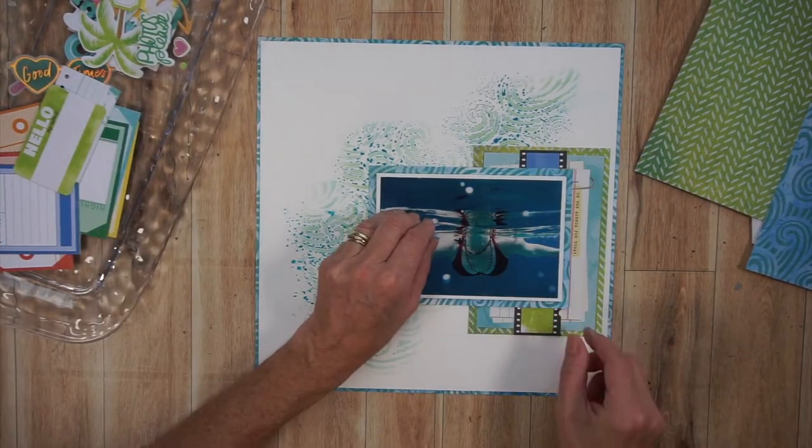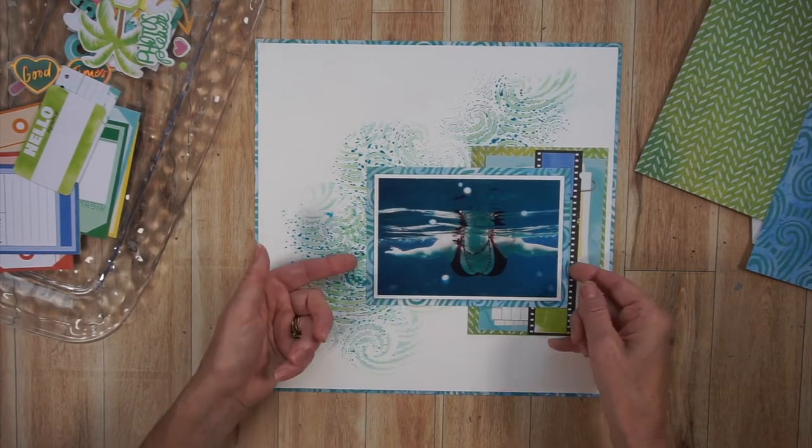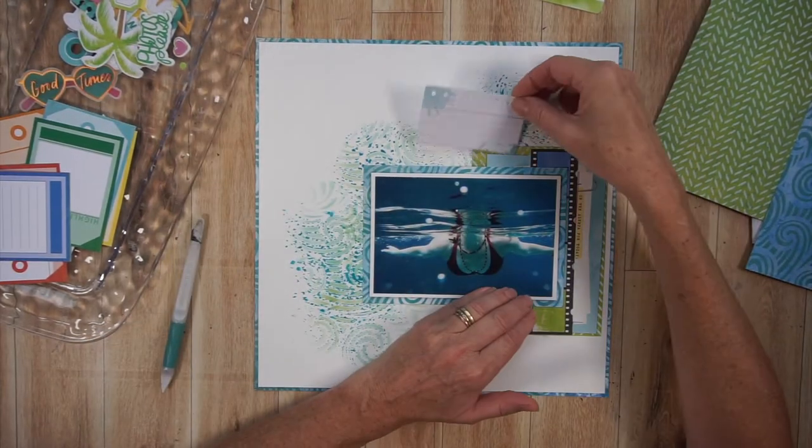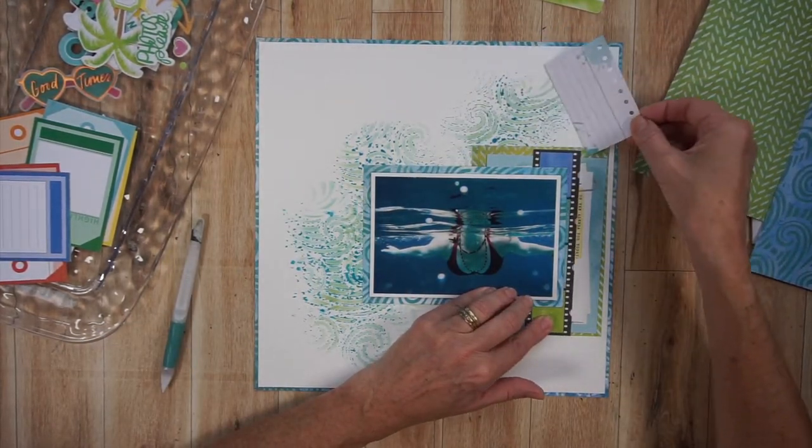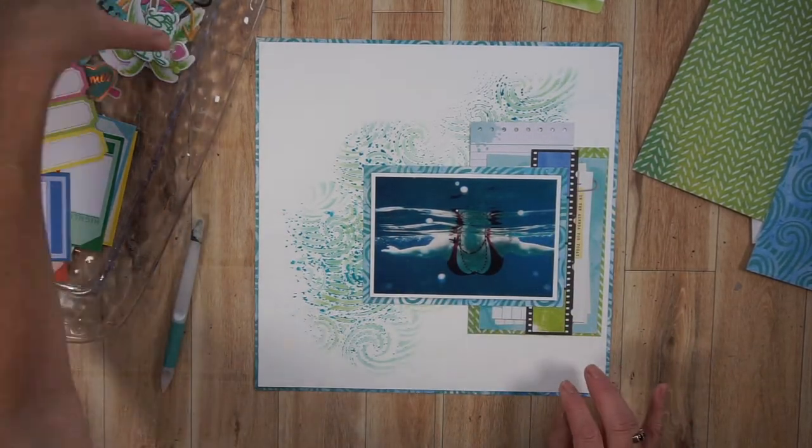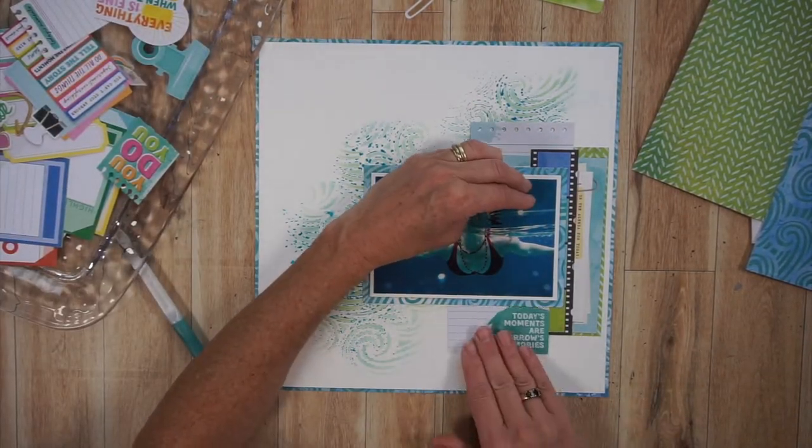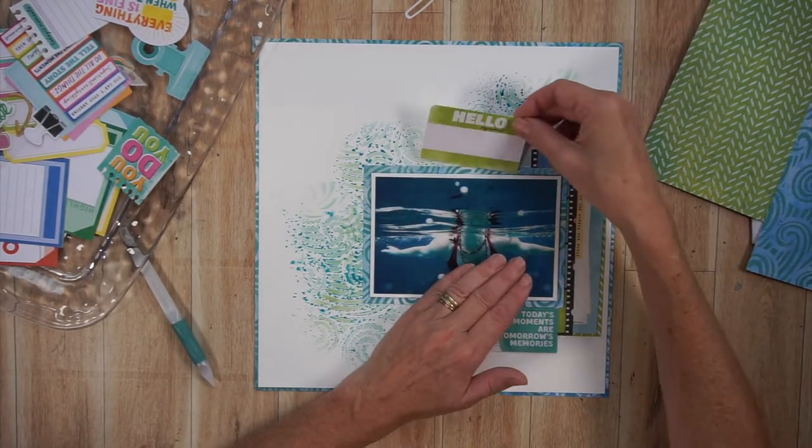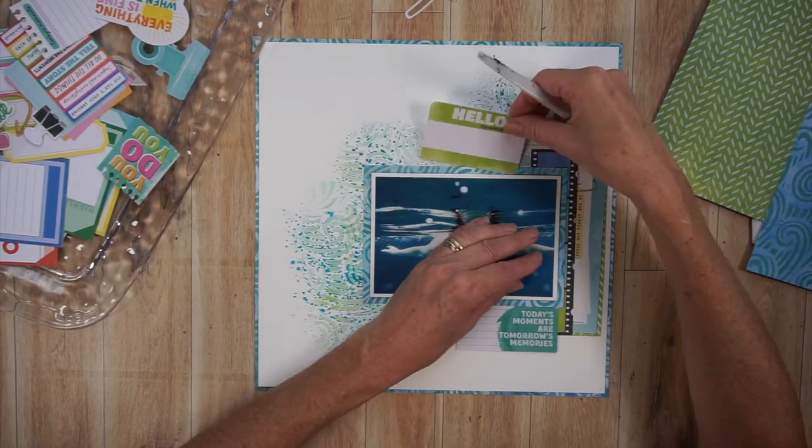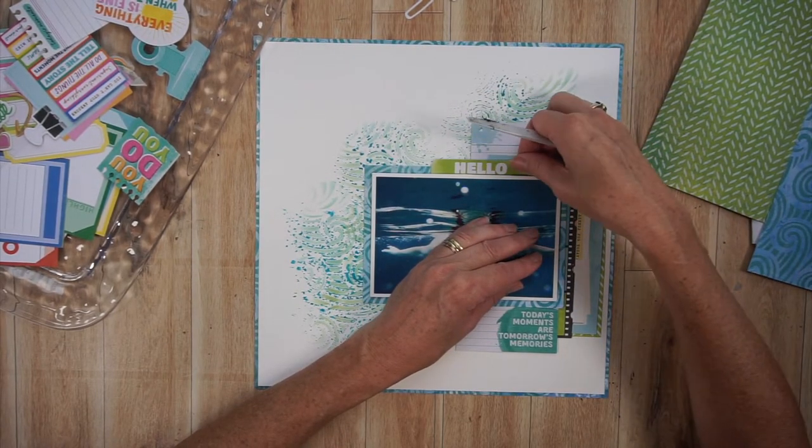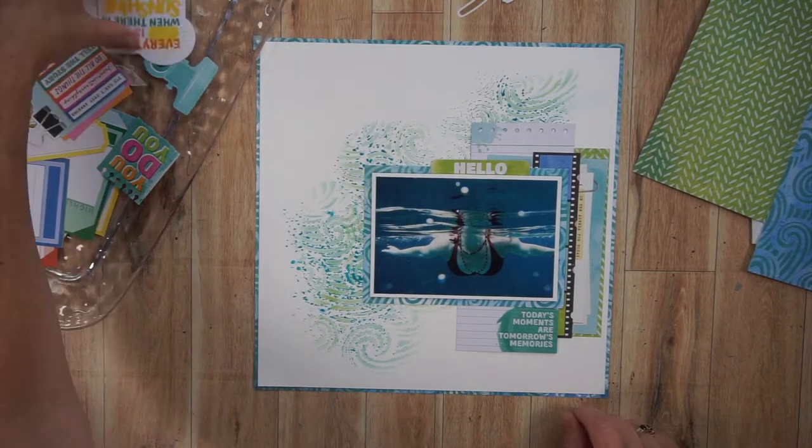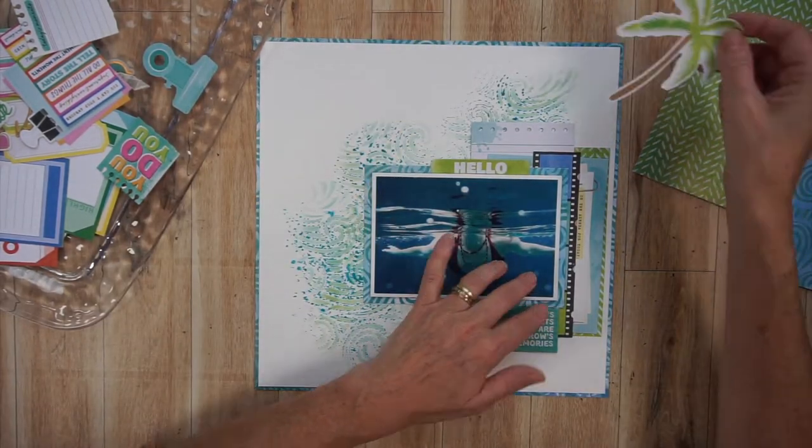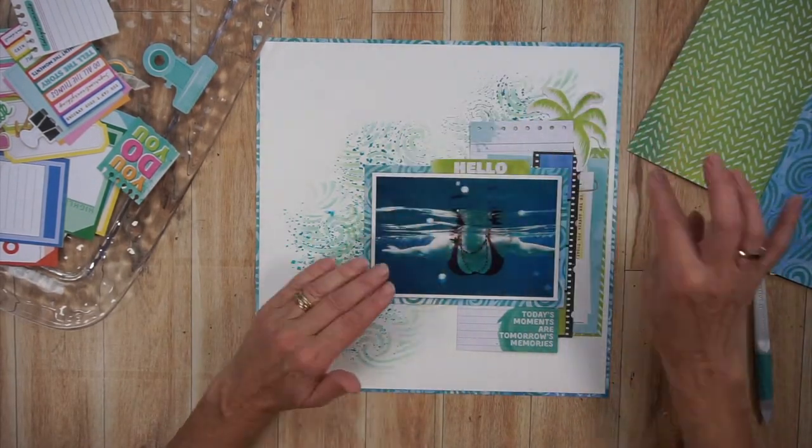Basically when I create what I call an exploding photo mat essentially I do have a bit of paper behind my photo but mostly what comes out from my photo are cut apart sheets and ephemera and in the end I come in with some finishing touches like stickers and possibly smaller stuff. So what you see me doing right there is just kind of building up from behind the photo and all I did was add one piece of that green paper and now I'm coming in with different bits and pieces of ephemera.